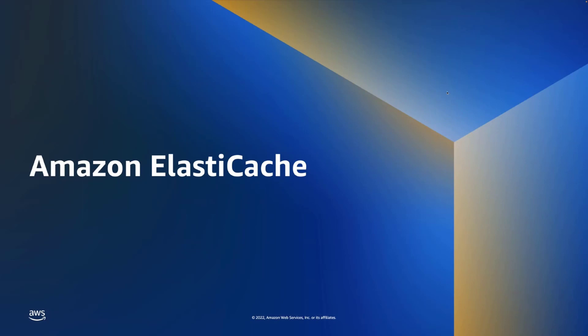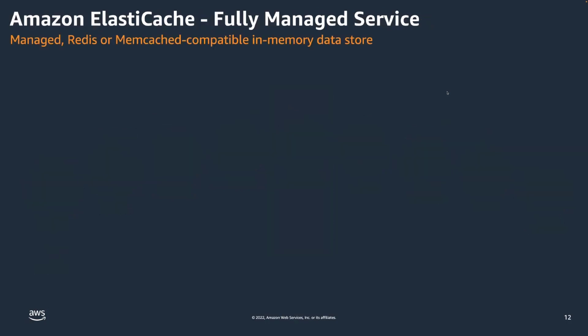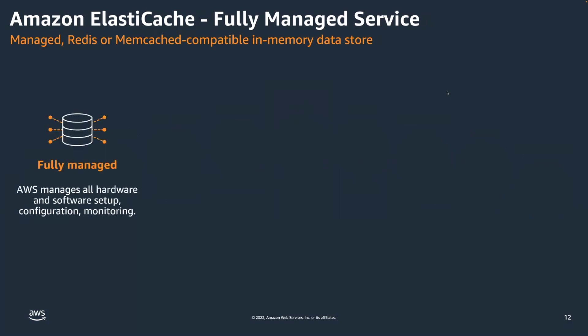Let's briefly talk about what Amazon ElastiCache is. AWS has the concept of a purpose-built database — using the right tool for the job. Amazon ElastiCache is our in-memory and cache data store, focused on ephemeral data use cases such as caching. It's a fully managed service, meaning we provision the hardware, configure the caching engine — whether it's Redis or Memcached — configure it to best practices, secure it, monitor it, provide failover, snapshot backups and restore, so you can focus on providing solutions for your customers.